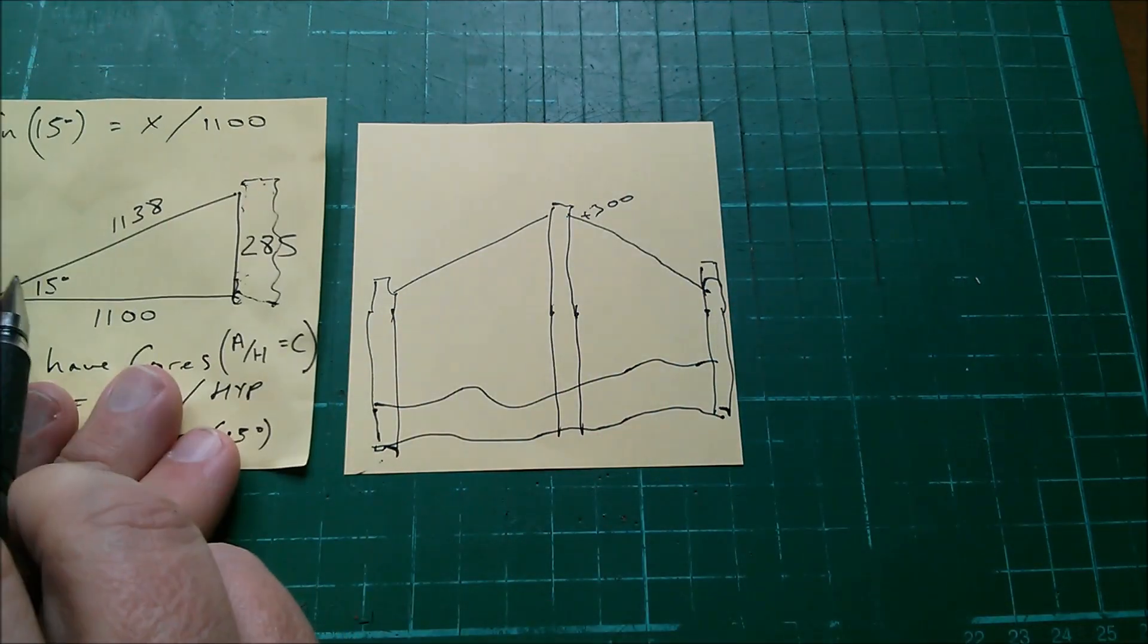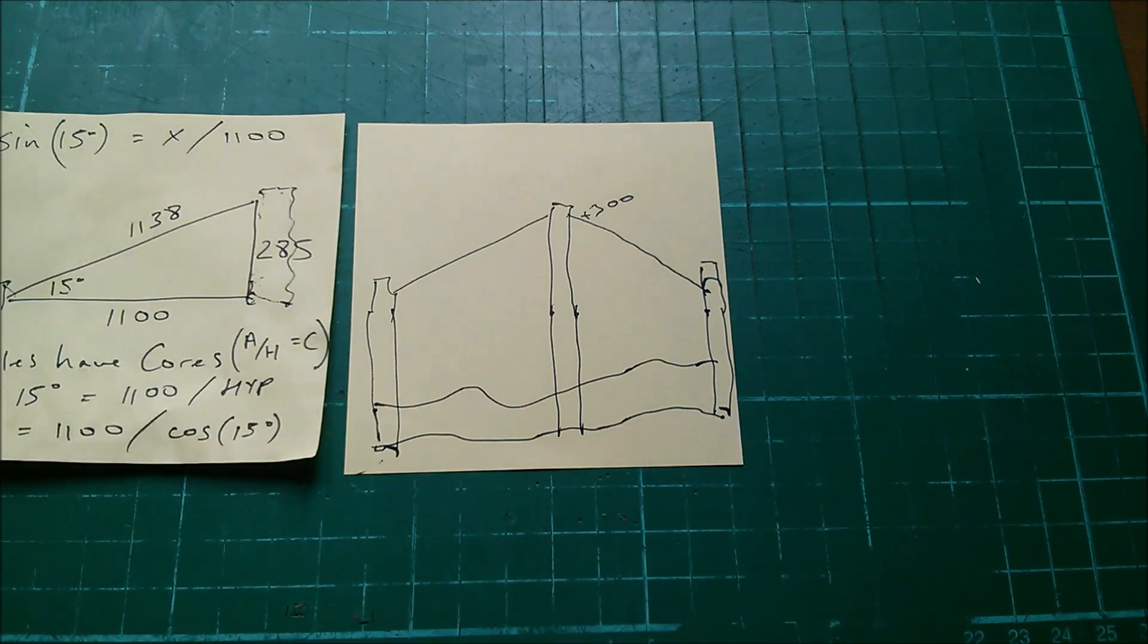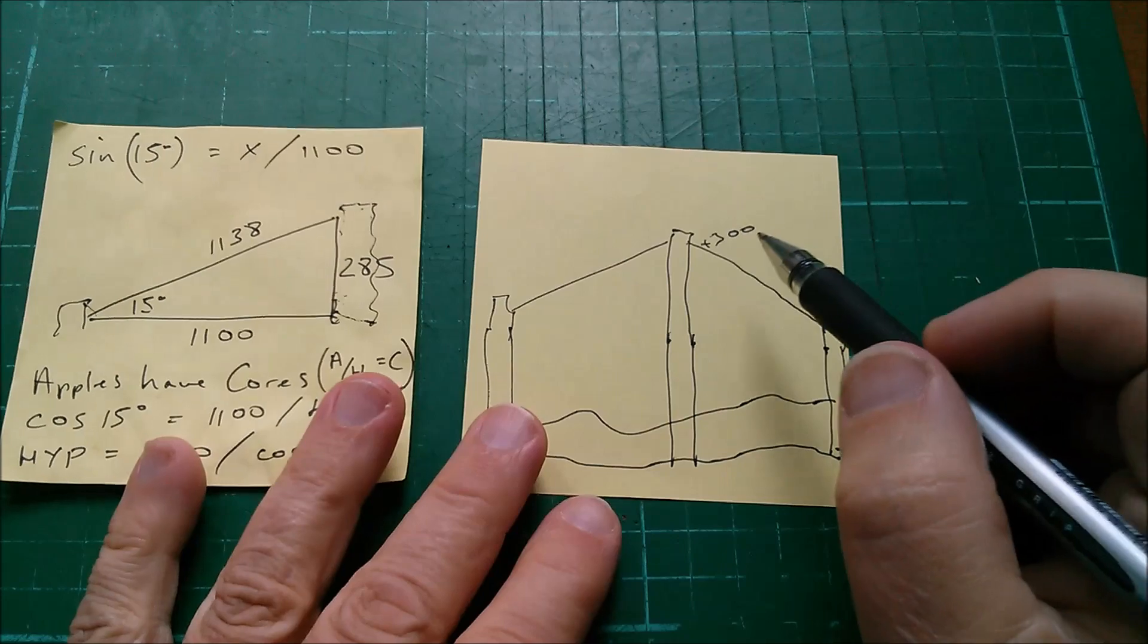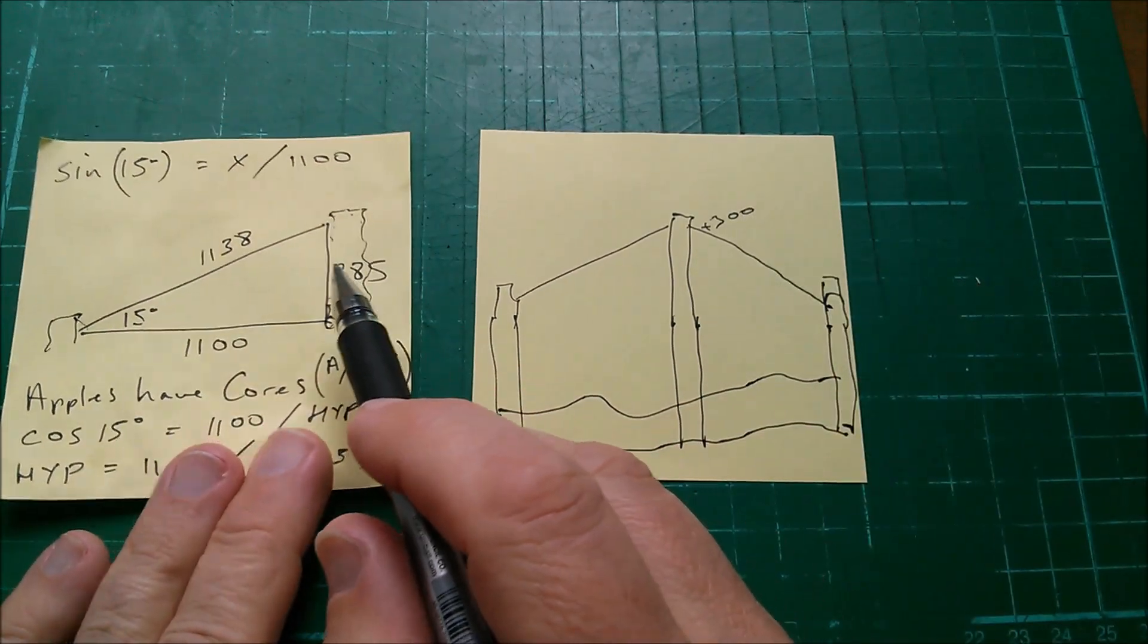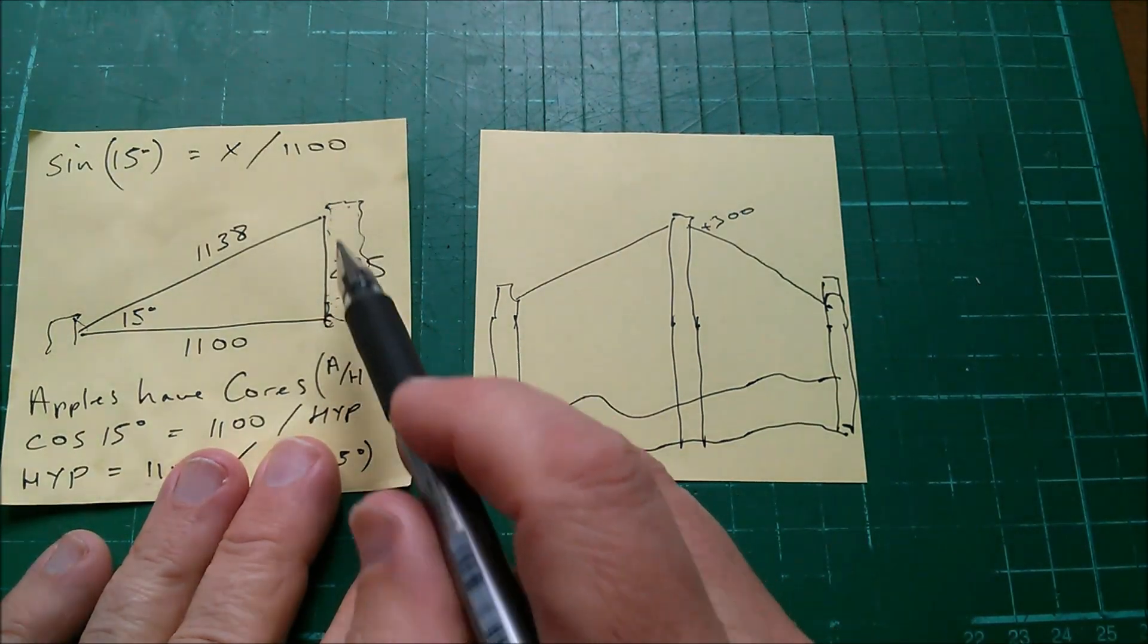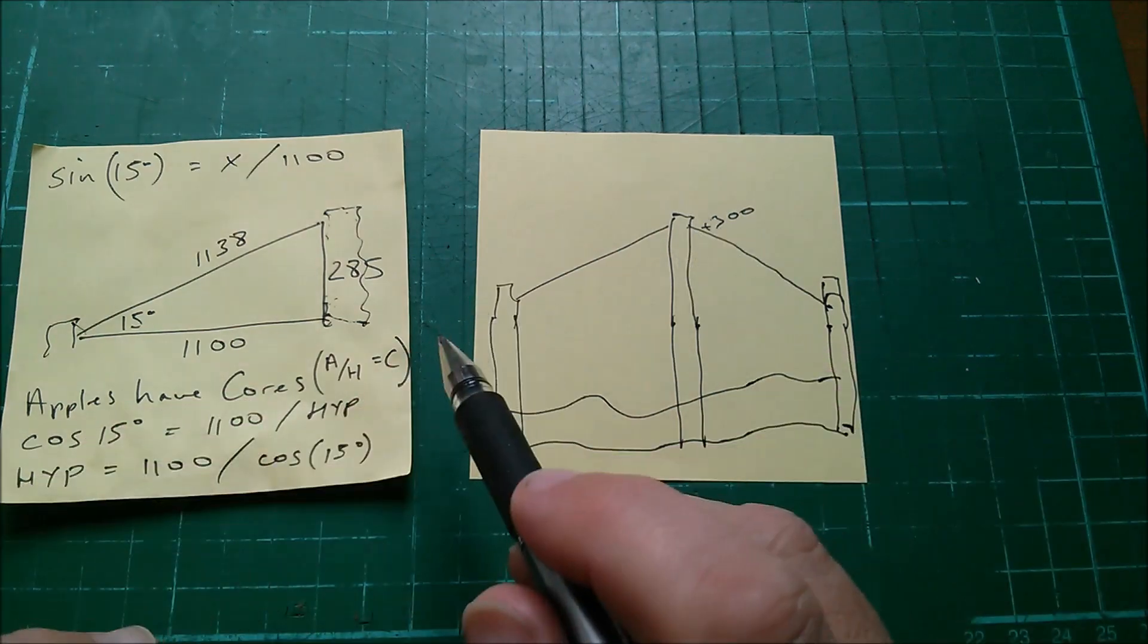And just do that in every instance, and I'm hoping it'll be about 15 degrees but it might vary. I've chosen 300 millimeters because it's close to the 285 which I calculated.